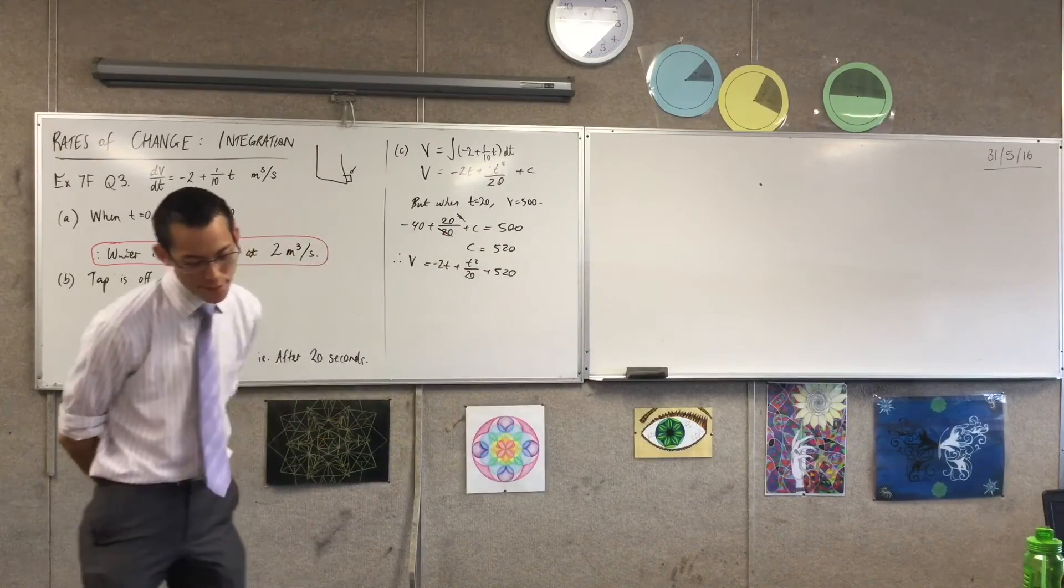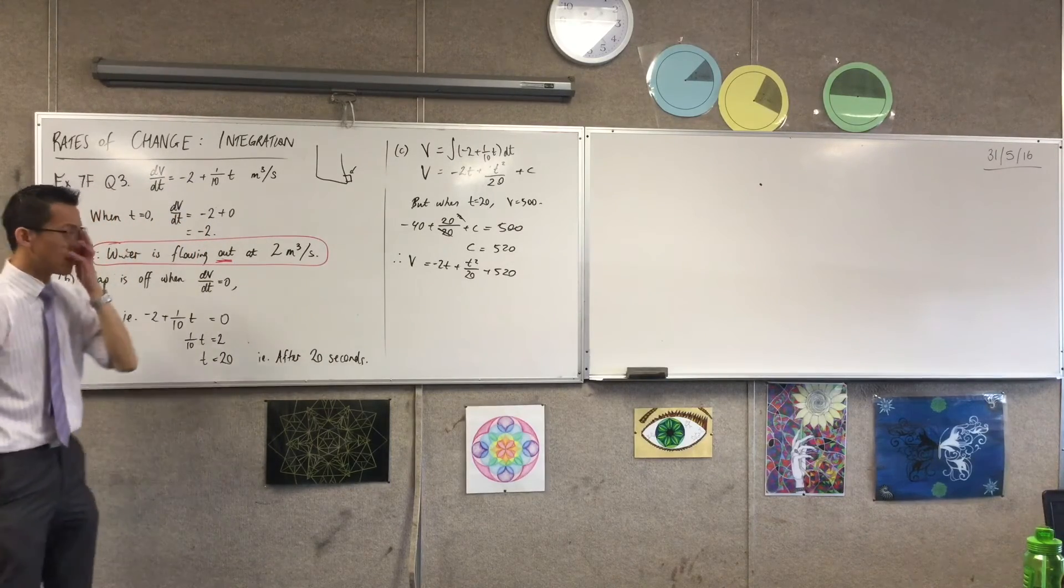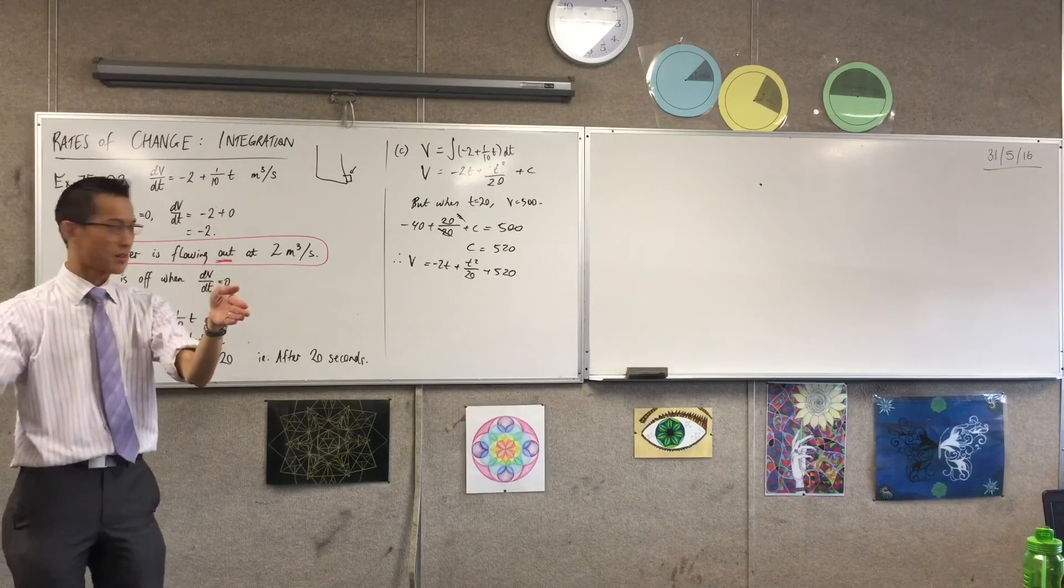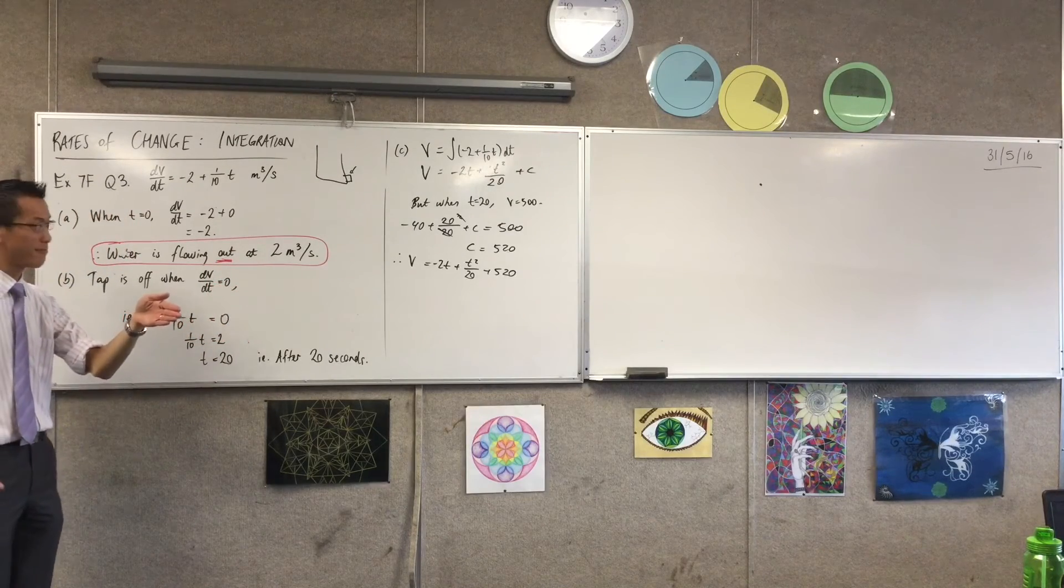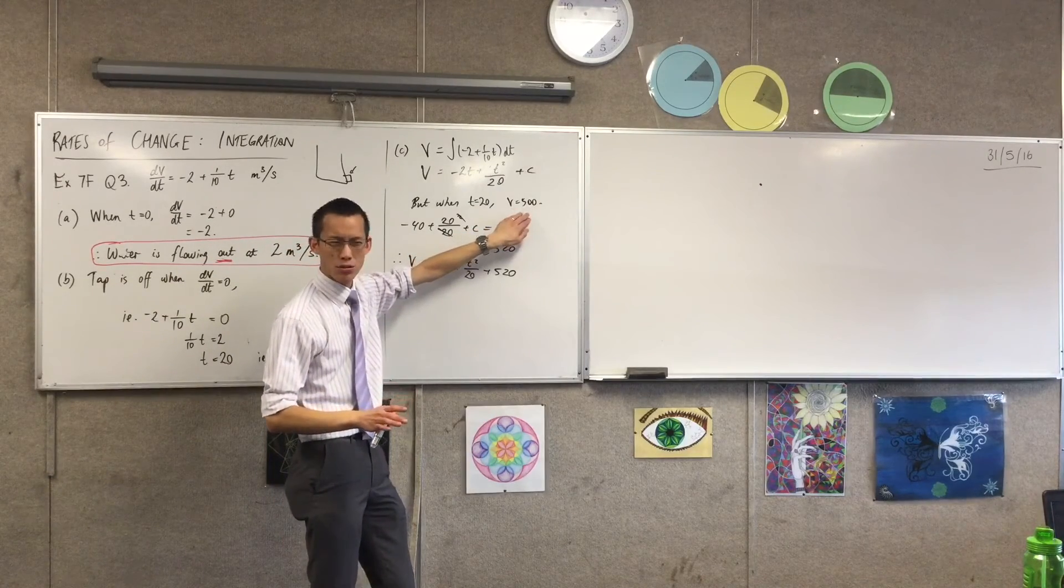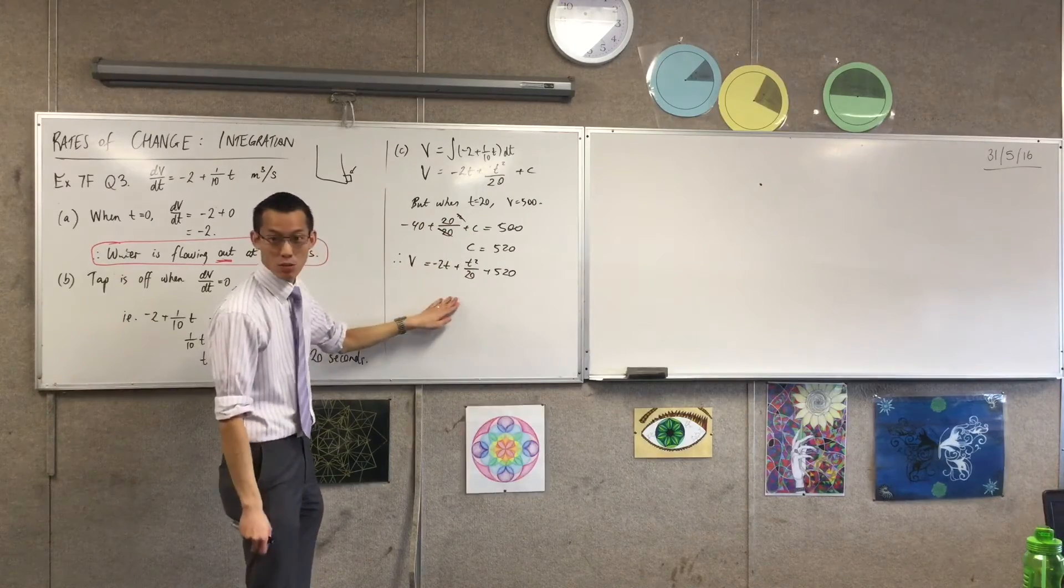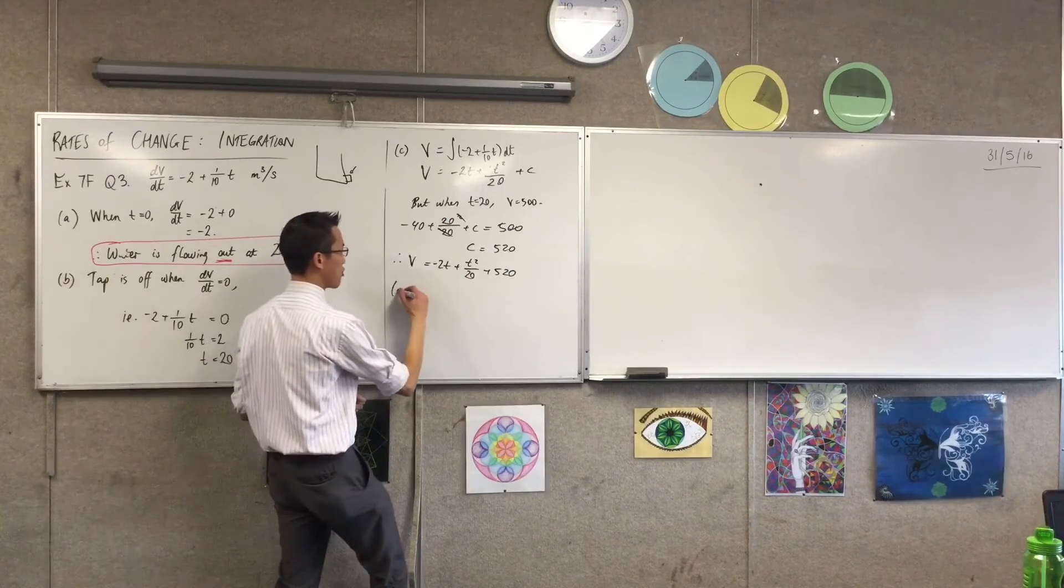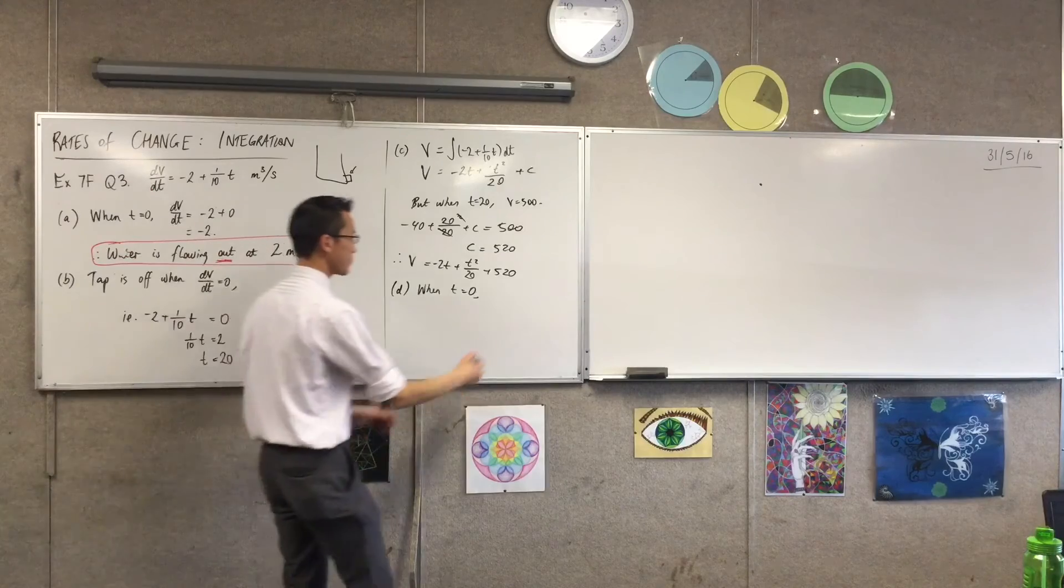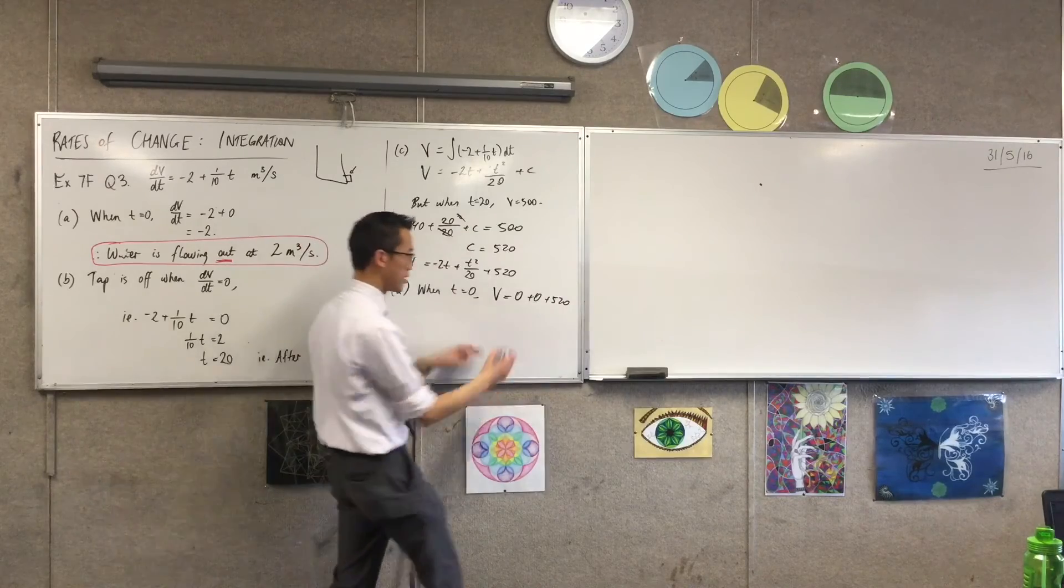Where do they want us to take this? Part D says, hence, find how much water is released during the time it takes to turn the tap off. So what you're trying to compare is where you started and where you ended. Now, in fact, I already know where I end. The question told me. I'm going to end at 500 litres. So all I need to do is compare that to the beginning. If I put in t equals zero, it's pretty easy. You can see those disappear. So I'm going to say, when t equals zero, or I could just say initially, volume is equal to zero plus zero plus 520. So this is actually my starting point.